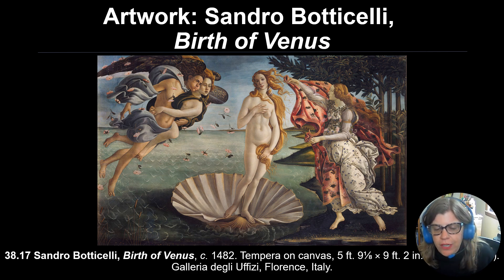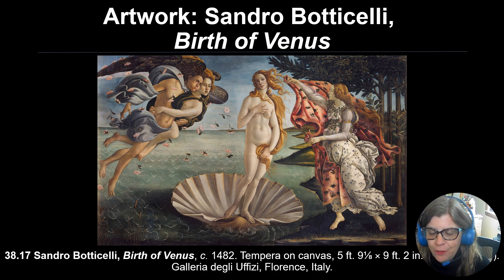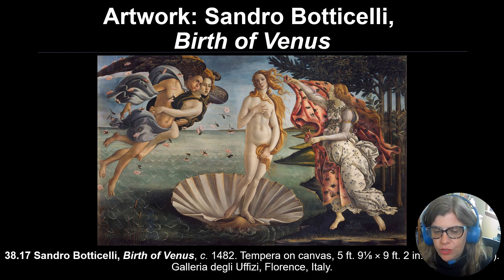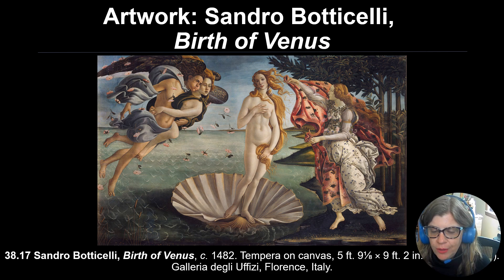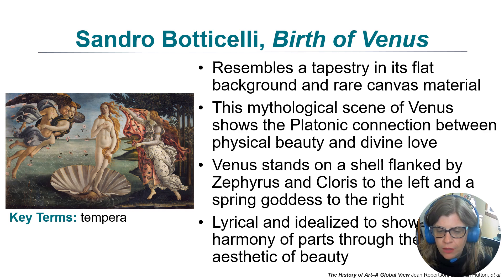Finally, we have The Birth of Venus. This is a classical painting — the Birth of Venus is a classical story in which she is born out of the ocean onto a clamshell. Here she has Zephyr, the wind god, blowing her shell to the shore, and a spring goddess ready to wrap her modestly when she arrives. It's a little unusual for the Renaissance in that the position Venus stands in is physically impossible — it's not realistic but very idealized. Some people compare it to a tapestry because of its flatness and patterning, but it has become one of the most famous paintings we associate with the Renaissance.